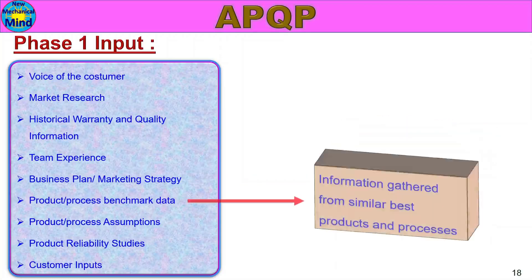Product or Process Benchmark Data: information gathered from similar best products and processes. A benchmark is a best-example product or process. We will refer to that as benchmark data.